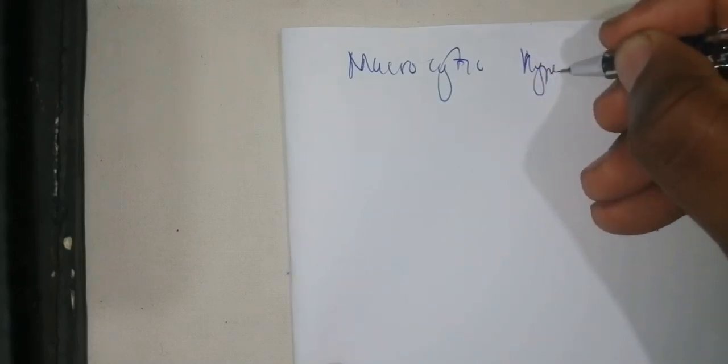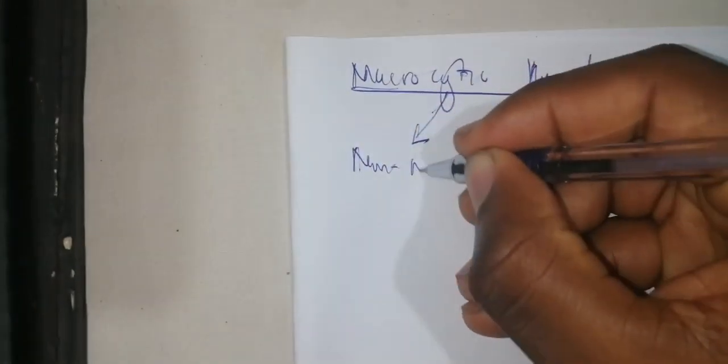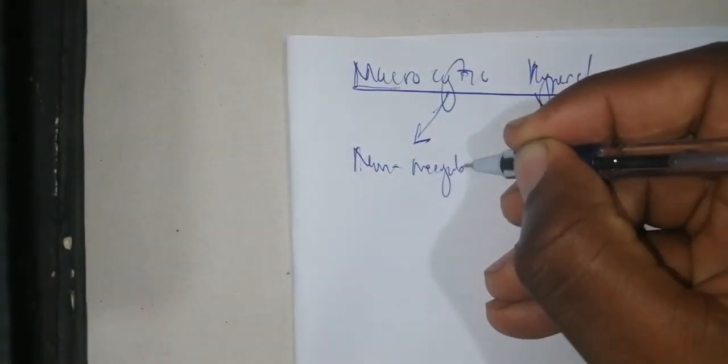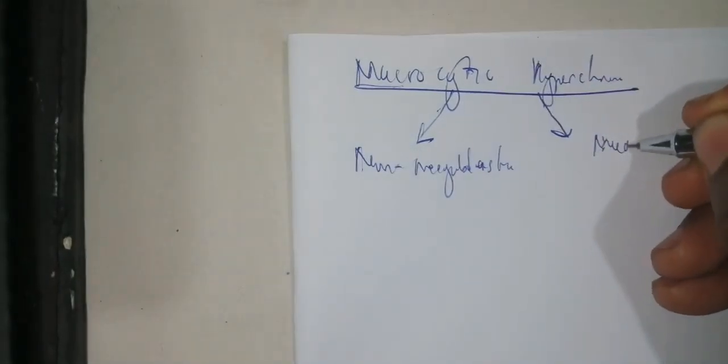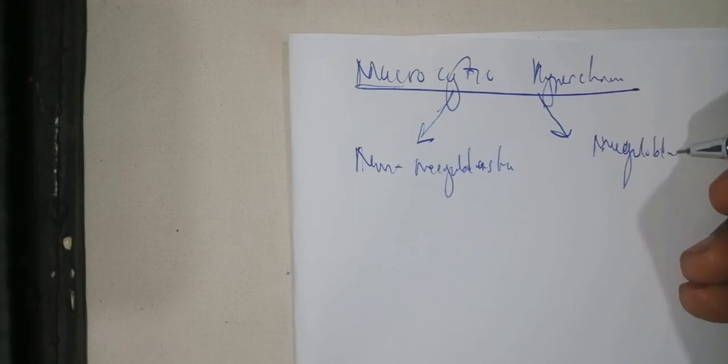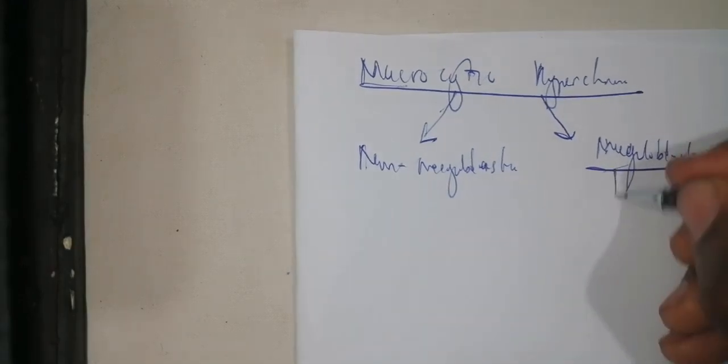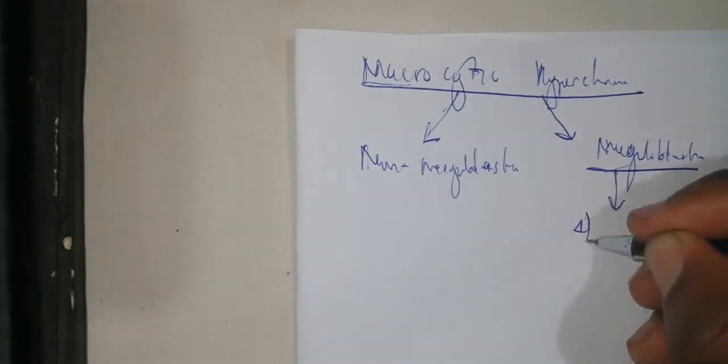After microcytic hypochromic anemia, we now visualize macrocytic anemia. Macrocytic anemia is generally divided into two types: non-megaloblastic anemia and megaloblastic anemia.